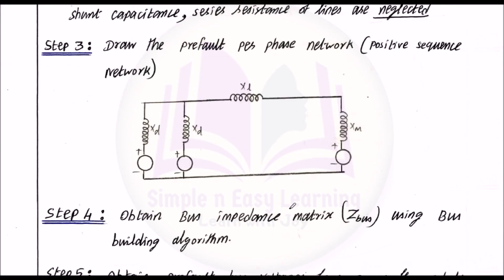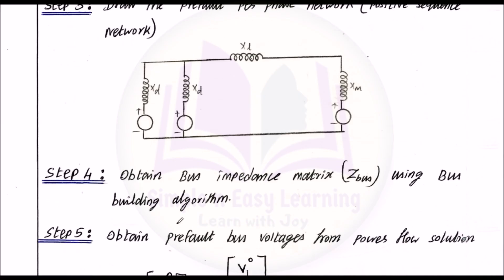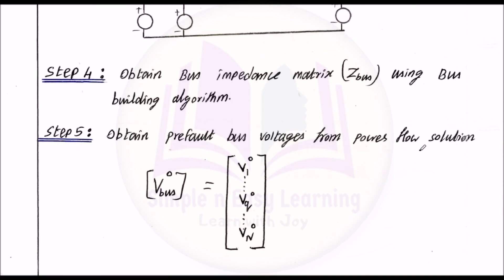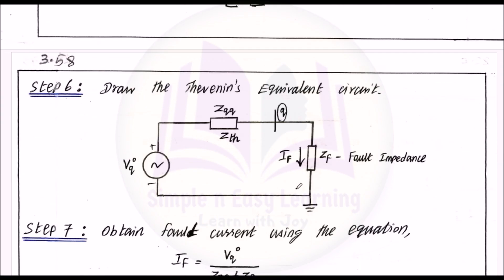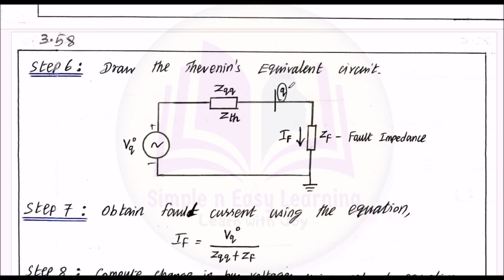Step 3 — draw the pre-fault per-phase network, the positive sequence network, which consists of two generators and one motor connected by a transmission line. Step 4 — obtain the bus impedance matrix using the bus building algorithm. Step 5 — obtain pre-fault bus voltages from the power flow solution: Vbus = [V10, V20, ..., Vn0]. Step 6 — draw the Thevenin equivalent circuit with voltage source Vq0, Thevenin impedance Zth (also called Zqq), and fault impedance Zf.